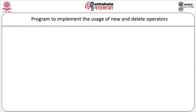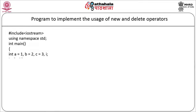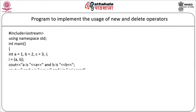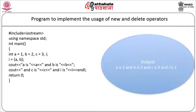A program for the comma operator: int a=1, b=2, c=3, i. Then i = (a, b). The output is: a is 1, b is 2, c is 3, and i is 2 (the rightmost value in the comma expression).